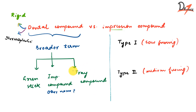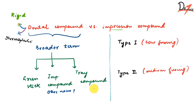Because of the different flow properties, we use them for different situations. Green stick has the better flow property so we use it for border molding. Tray compound has the least flow property, so it is used for making the initial impression tray upon which you can take a final impression using some other material like zinc oxide eugenol impression paste.